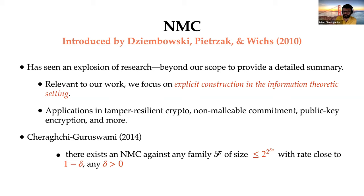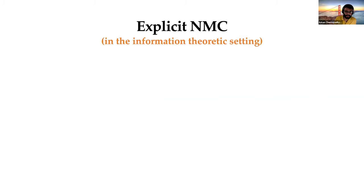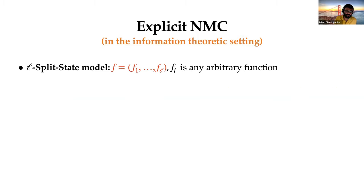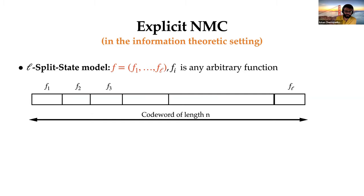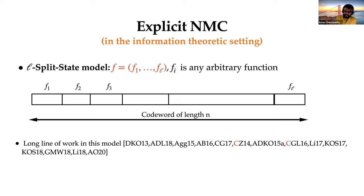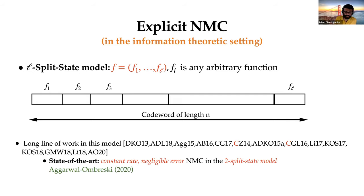The question is: for interesting tampering functions, can we actually construct such codes? A really popular model is the split state model, where the codeword is split into L parts, each part is kept on a server, and we allow any arbitrary function to act on each server individually. This model has been heavily studied in recent years. In the two split state model, we now have constant rate and negligible error, achieved in a recent work.